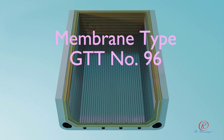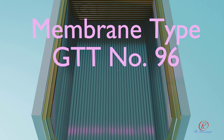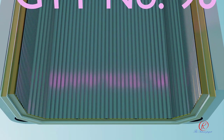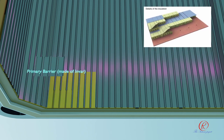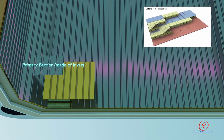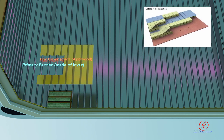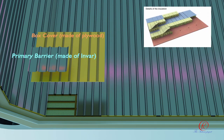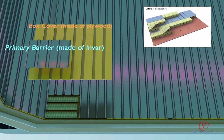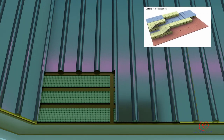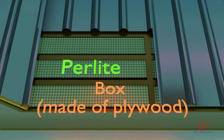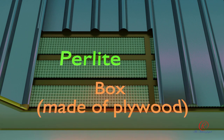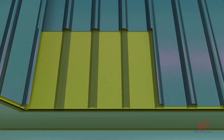Membrane type GTT No. 96 consists of a structure made of plywood filled with perlite in order to keep thickness and insulation. Each design is composed of two invar membranes — primary barrier and secondary barrier — and linked to the double hull tanks via invar tubes. The insulation is 530 mm thick and constructed with perlite. The boxes are connected to the double hull by means of couplers.